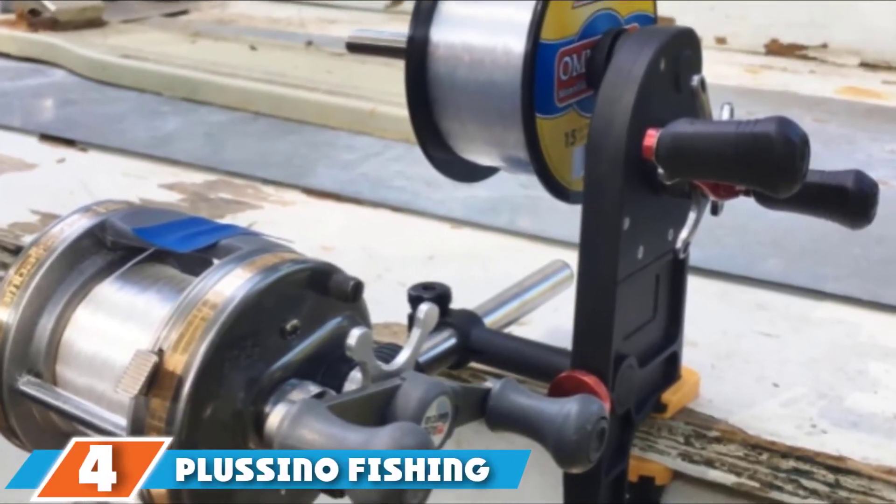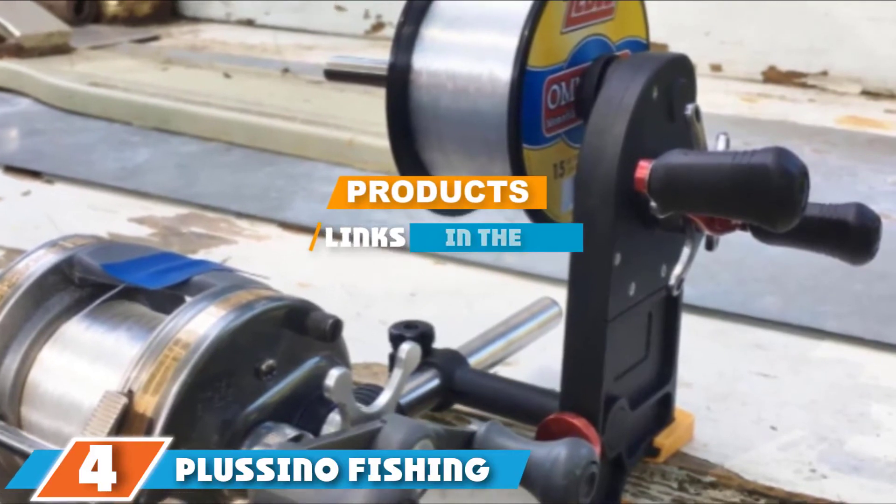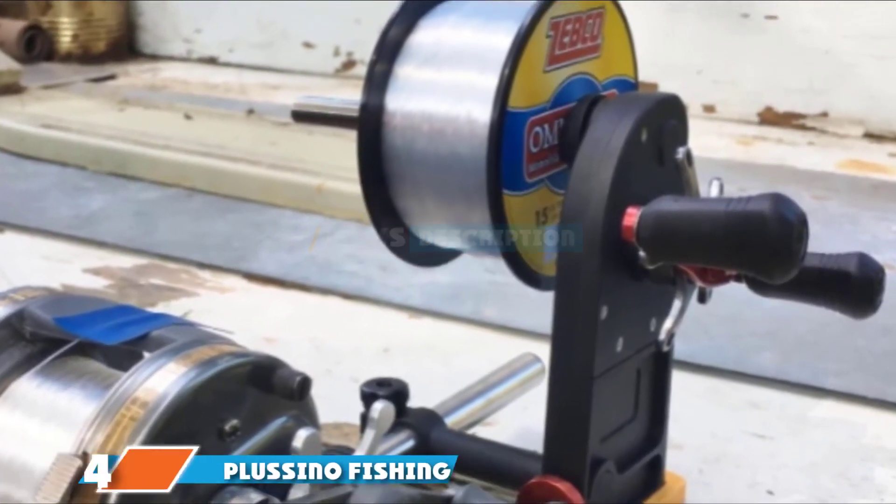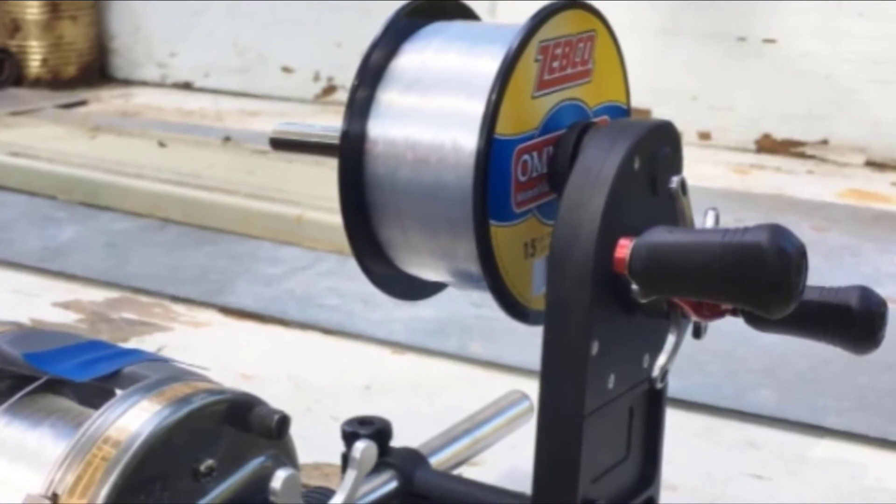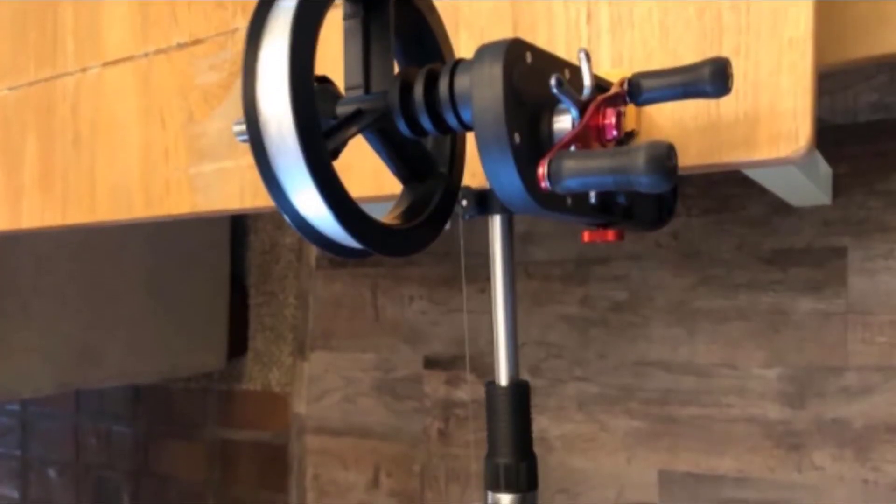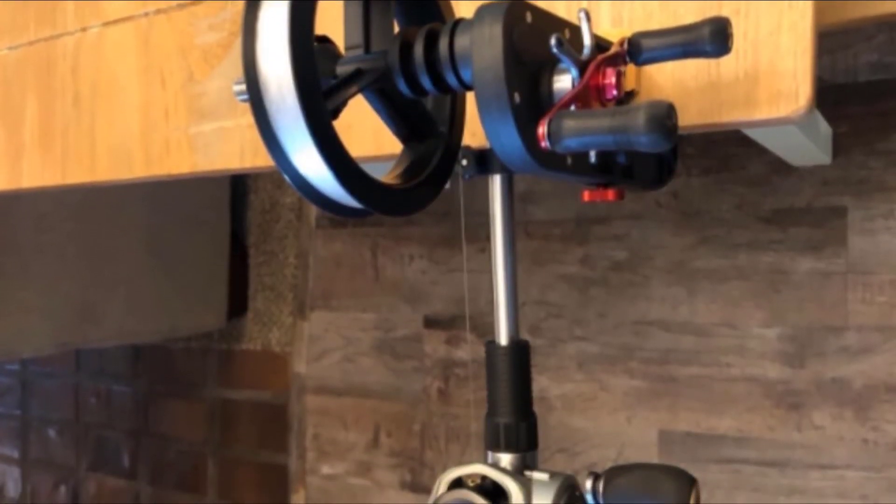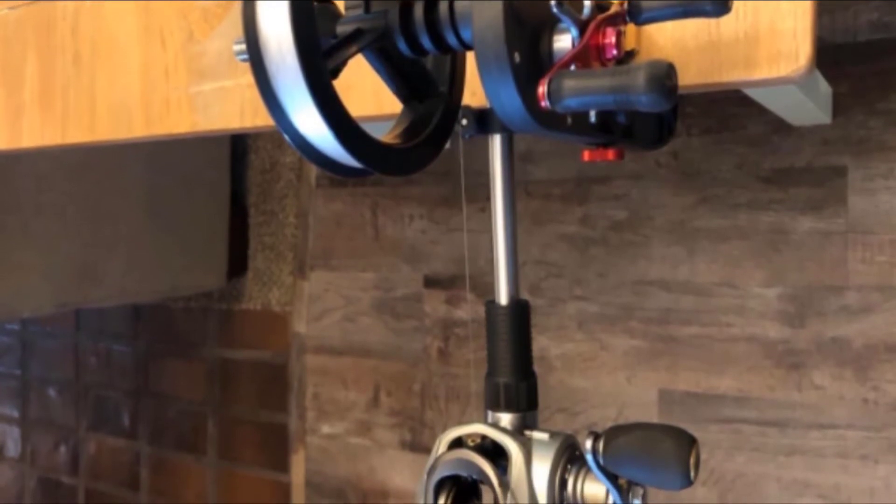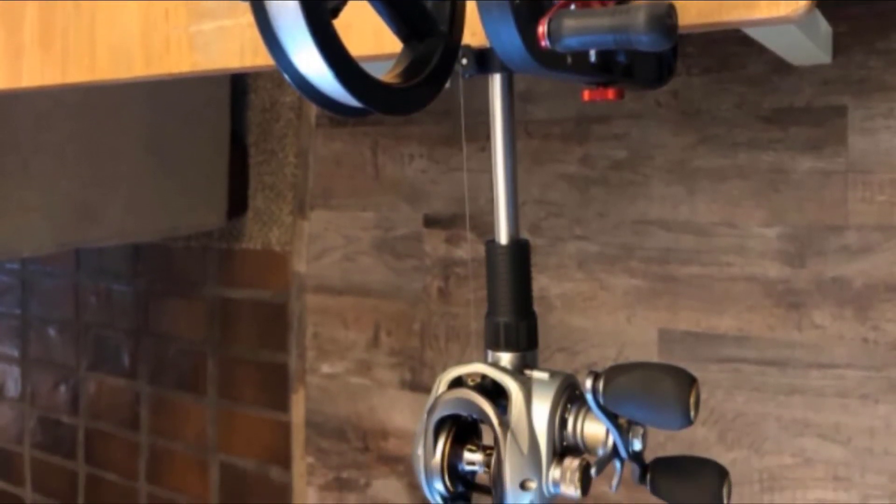Moving on to the next, at number four we have Plosino fishing line spooler. The Plosino fishing line spooler features a two-way function. This includes transferring the line from the spool to the reel. The line from the wheel can then be quickly reeled to an empty spool and stored.